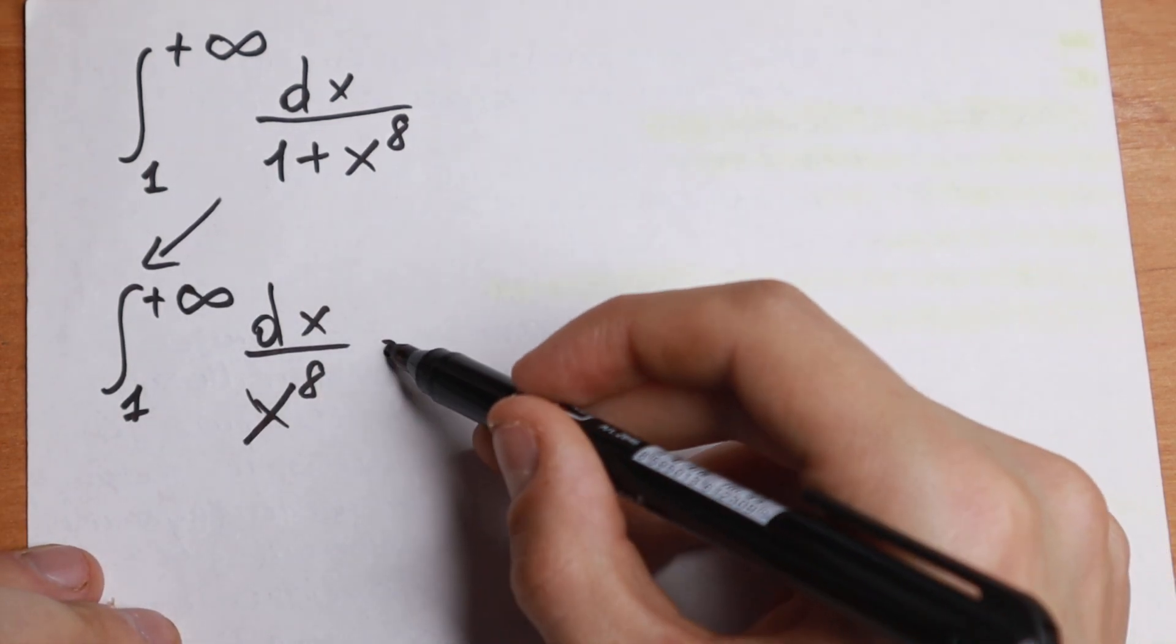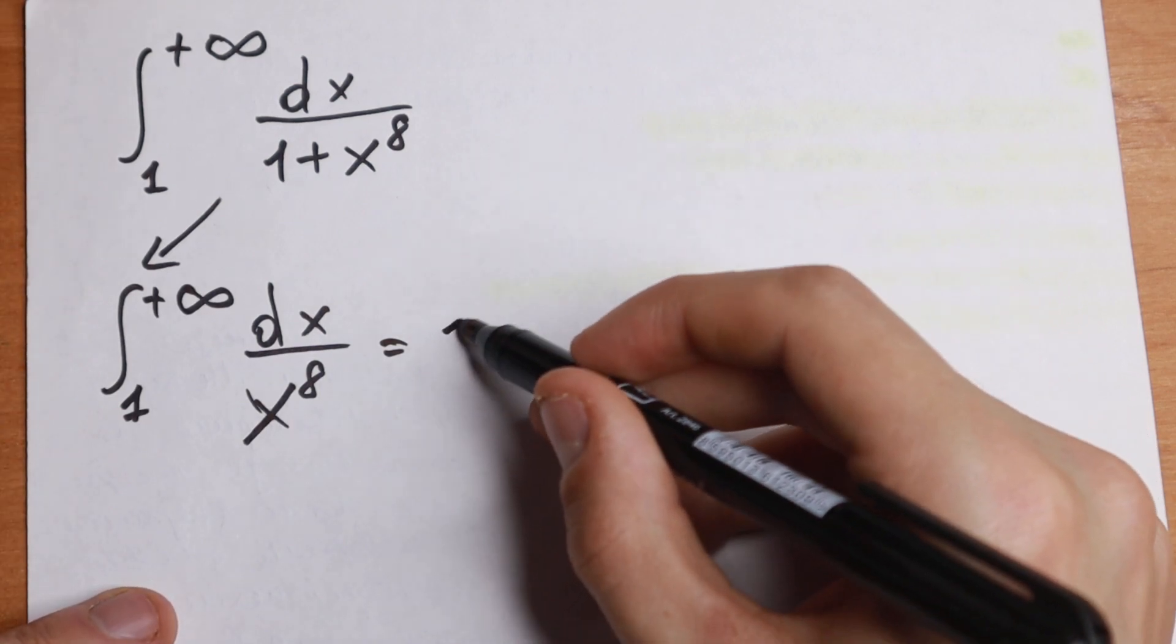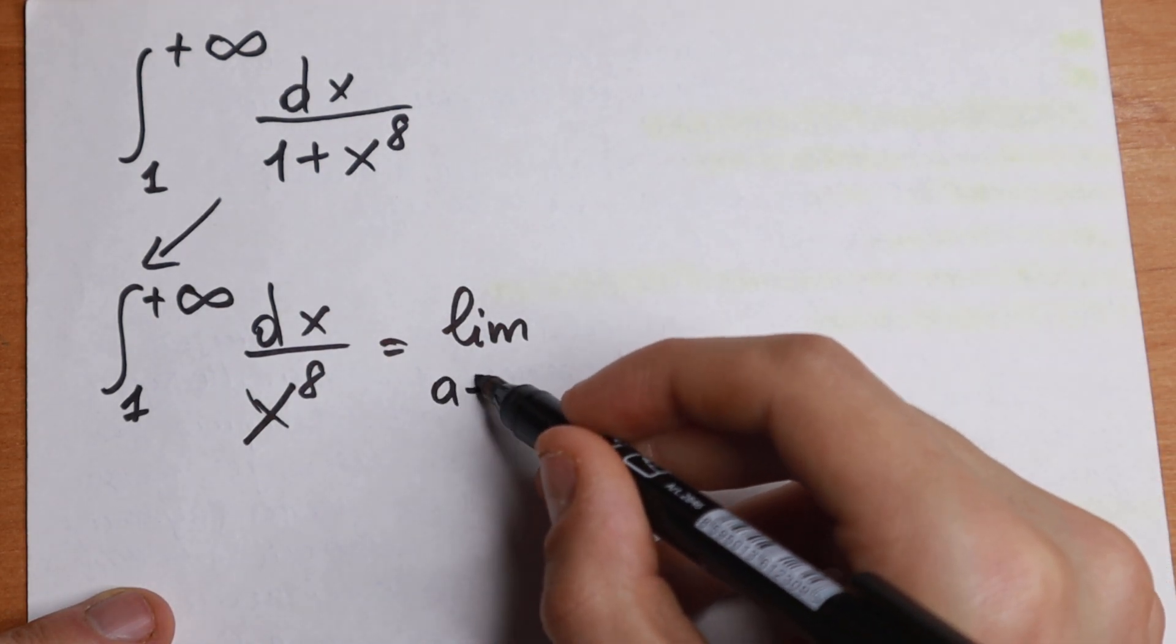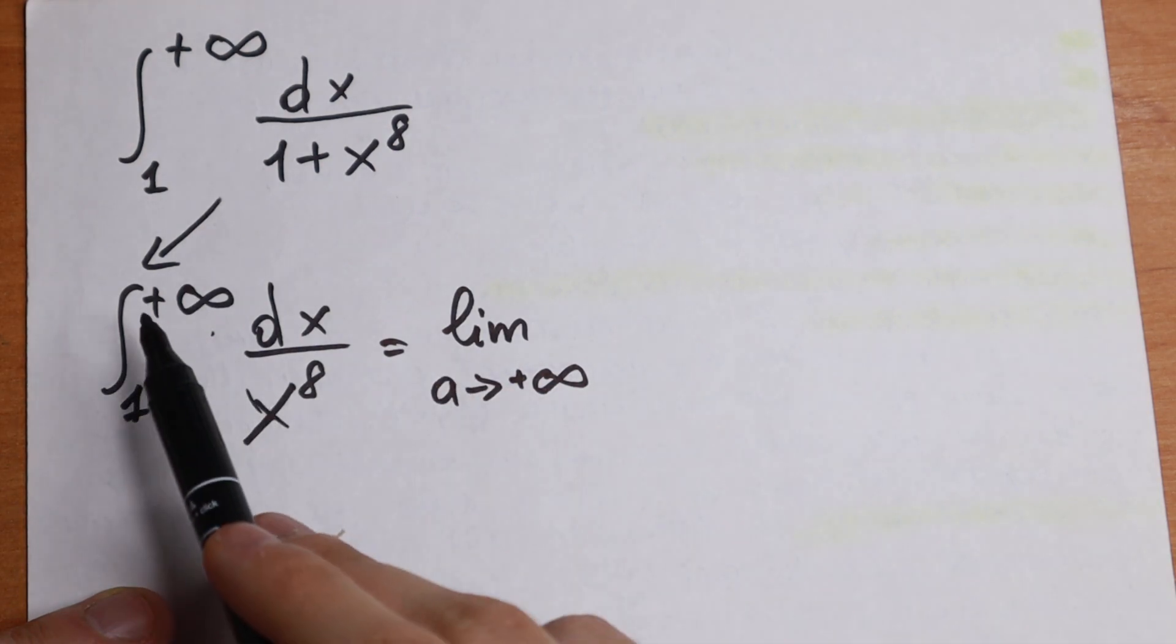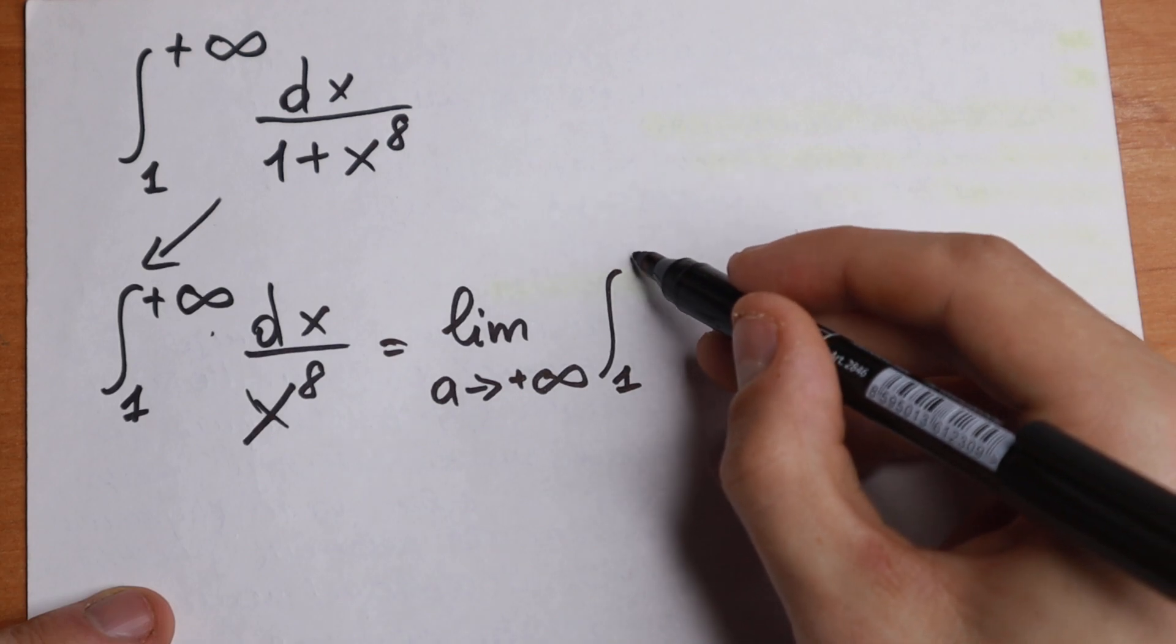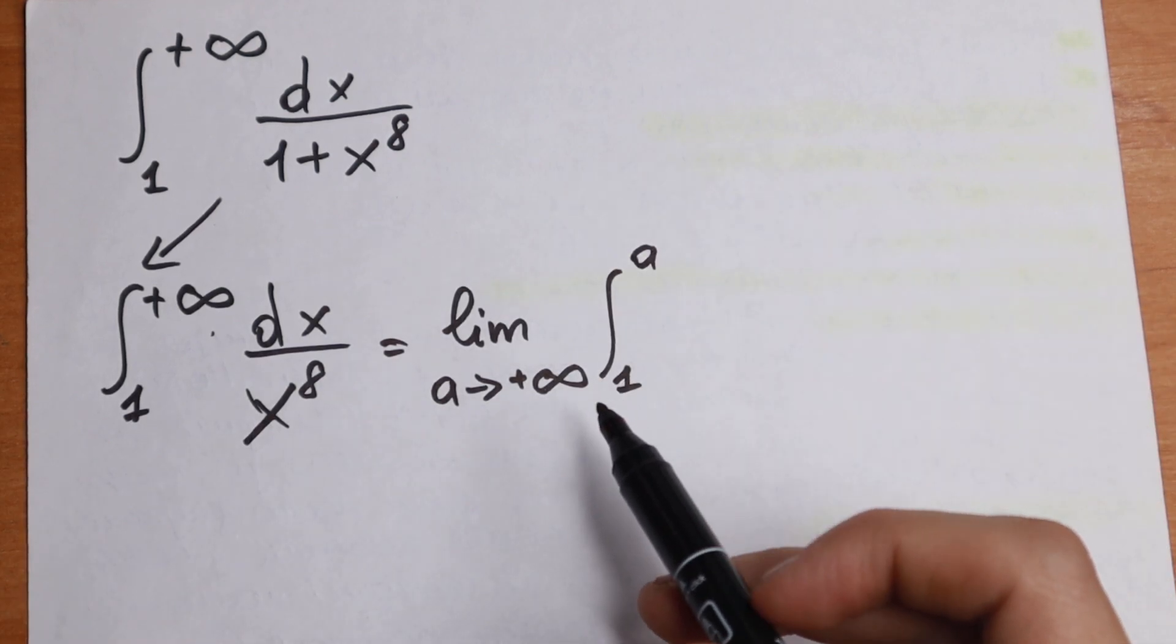So how can you solve this? A really good case for this kind of integral is to write a limit and to change the measures right here. For example, a approaches plus infinity and instead of this plus infinity you put this a. So the integral will be from 1 to a.